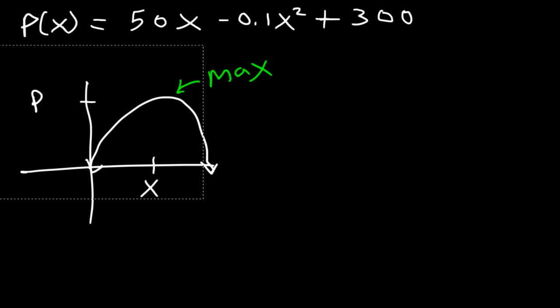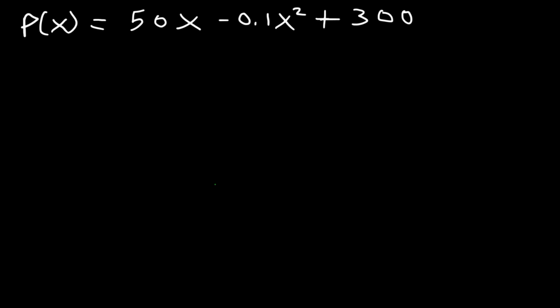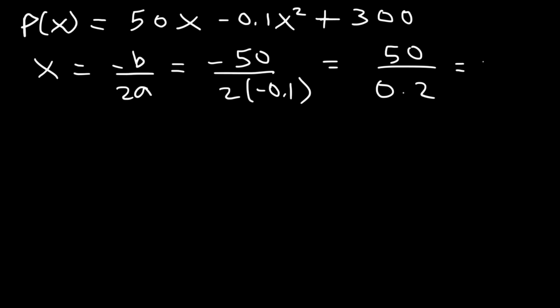Now basically we have a quadratic function in standard form. So to find the vertex, the best thing to do is to use this equation: negative b over 2a. b is the number in front of x which is 50. a is the number in front of x squared which is negative 0.1. The two negative signs will cancel so it's 50 divided by 0.2 and that's about 250. So to maximize profit we want to sell 250 units. That's the x value of the vertex.